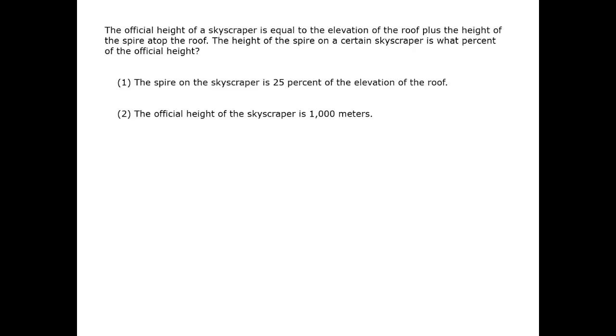In this question, there are three variables in play, all of which are heights. We have the roof height, which we can call a big H. We have the spire height, which we can call little h, and the combined height, which we can call big H plus little h.